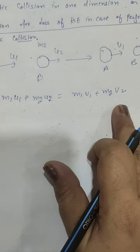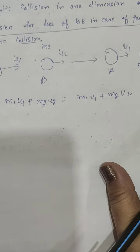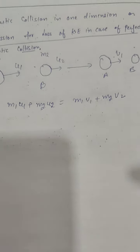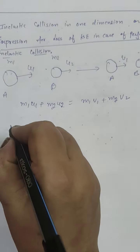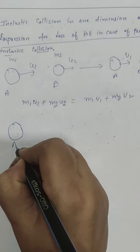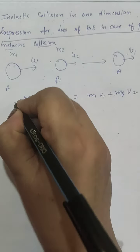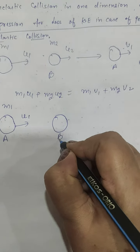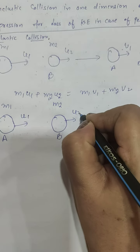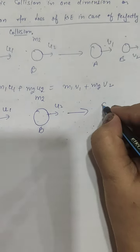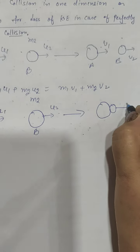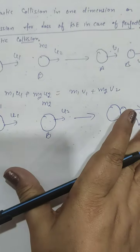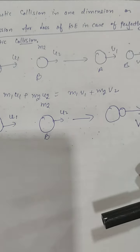Knowing the values of different variables, we can get the velocities v1 and v2. But in the case of perfectly inelastic collision, what does that mean? Body A of mass m1 moving with velocity u1 collides with body B of mass m2 moving with velocity u2, and they stick together, then move with a common velocity v. Such a collision is known as a perfectly inelastic collision.